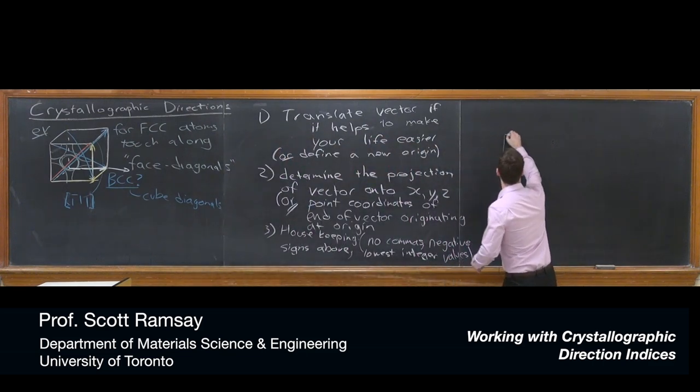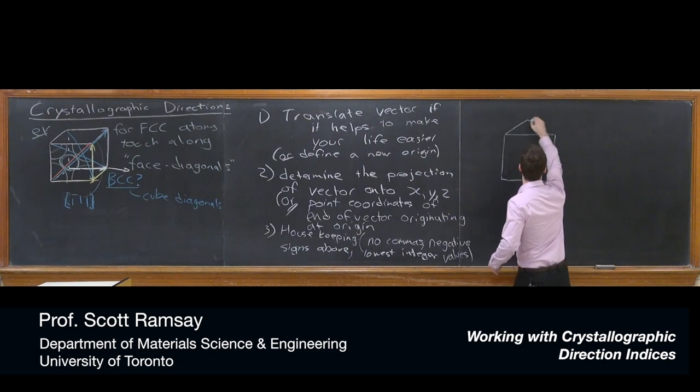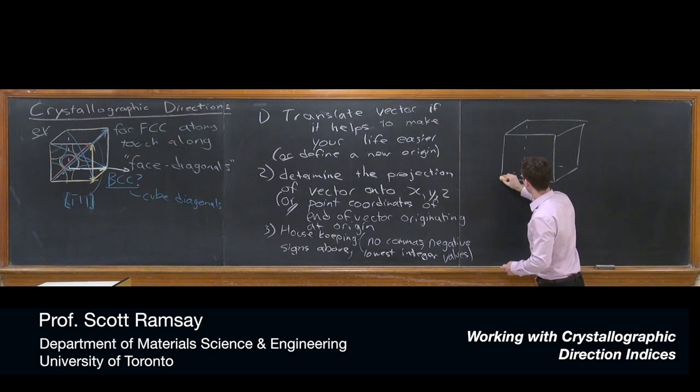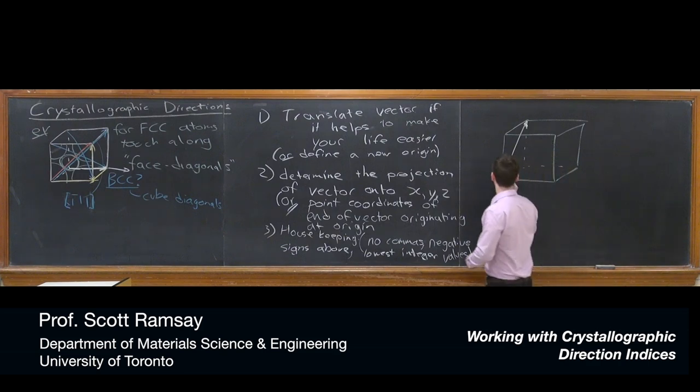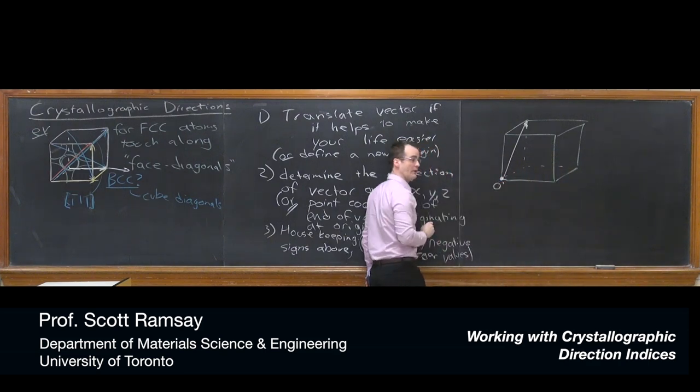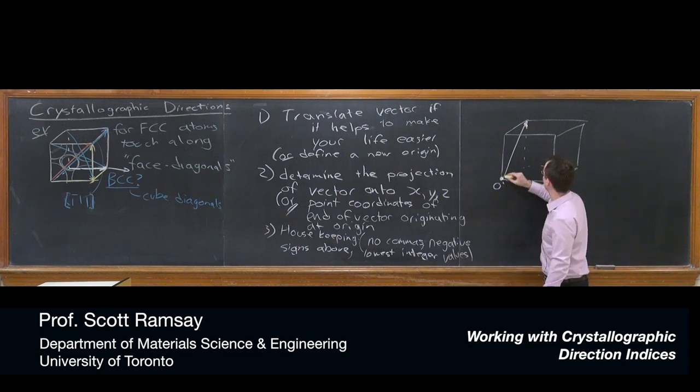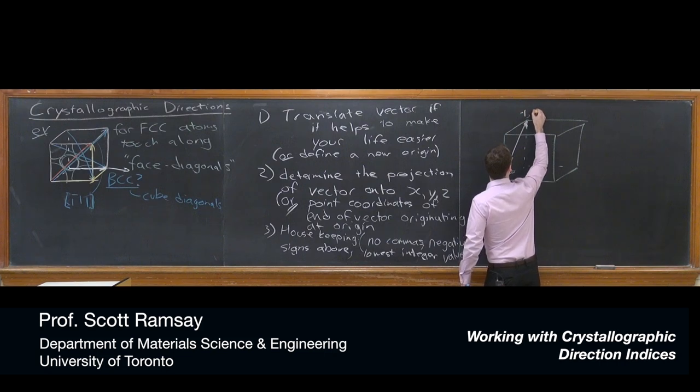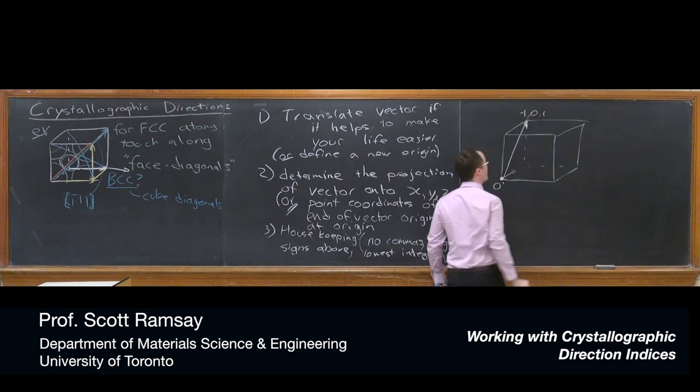So that's it. Let's take a quick look at an example and then we'll wrap this up. So let's take a look here at a unit cell. And say, we want to describe the vector that originates here and travels towards the back top left corner. Well, again, if I just go ahead and define a new origin there, well then the point coordinates are negative 1 in the x direction, 0 in the y, and 1 in the z. Negative 1, 0, and 1.